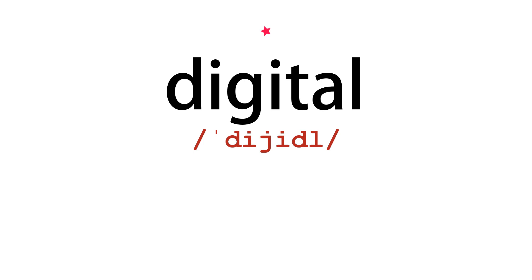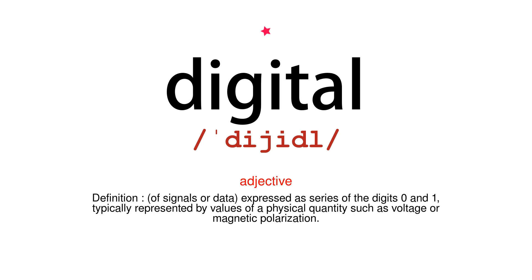Digital. Adjective. Definition – of signals or data expressed as series of the digits 0 and 1, typically represented by values of a physical quantity such as voltage or magnetic polarization.